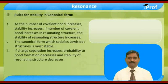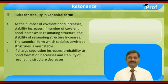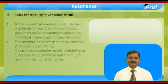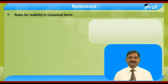The canonical form which satisfies the Lewis dot structure is more stable. If charge saturation increases, the probability of bond formation decreases and the stability of the resonating structure decreases. As charge separation increases, the probability of bond formation decreases and the stability of the resonating structure decreases.